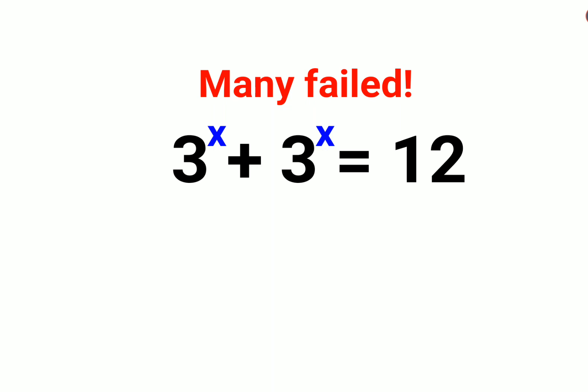See, when you don't understand how to solve this, what you can do is: we have 3 raised to x plus 3 raised to x equals to 12. In that case, you take 3 raised to x common and I am left with 1 plus 1 equals to 12. So this comes out to be 3 raised to x into 2 equals to 12.